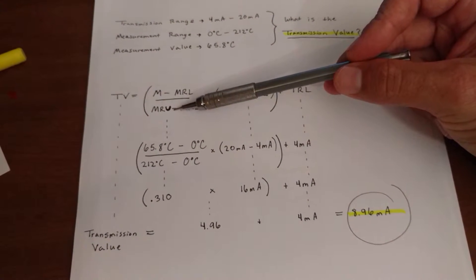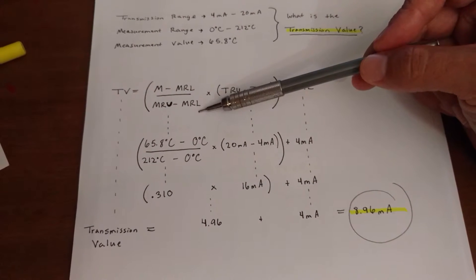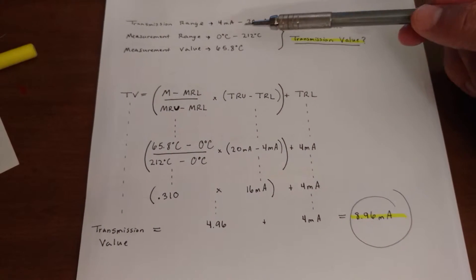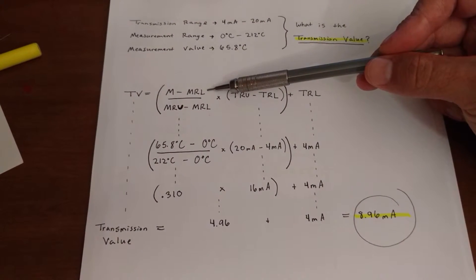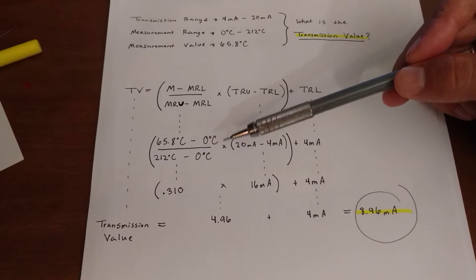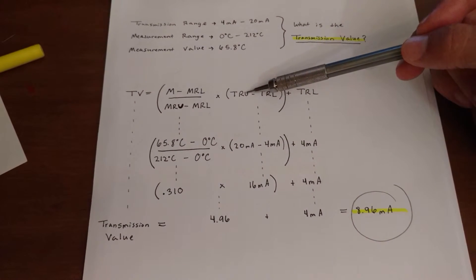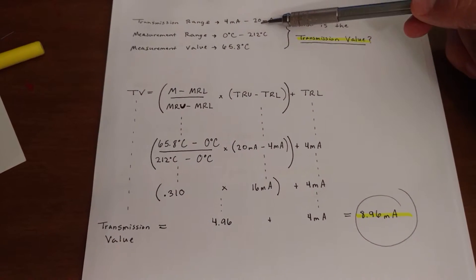Let's go ahead and plug in the measurement range upper value, measurement range lower value. So here we go. 212 degrees Celsius, and we just use the measurement range lower value, 0 degrees Celsius, times the transmission range upper value. That's right here, 20 milliamps.